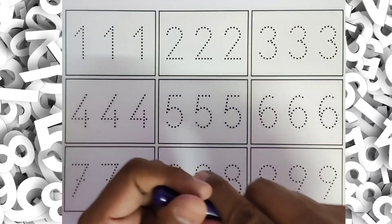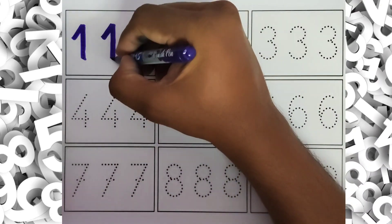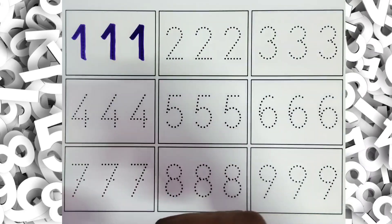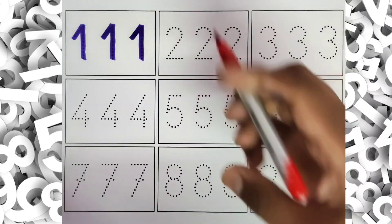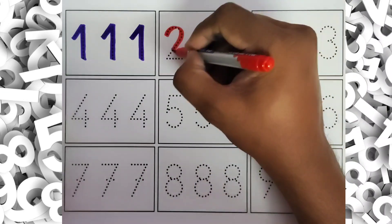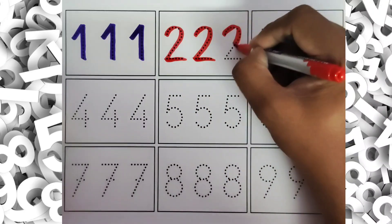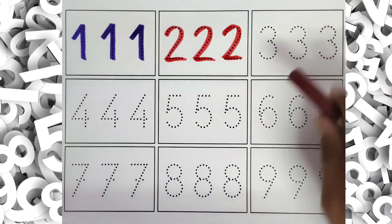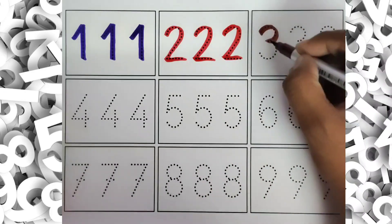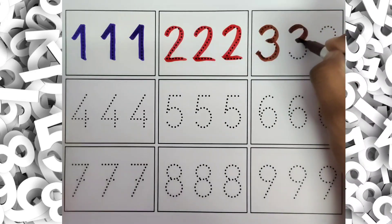This is 1, 1, 1, 1. This is 2. 2, 2, 2. This is 3. 3, 3, 3.